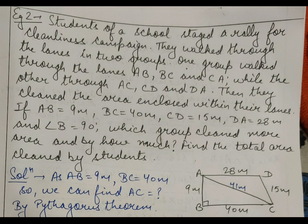There is one more example: students of a school staged a rally for a cleanliness campaign. They walked through the lanes in two groups. One group walked through lanes AB, BC, and CA, while the other walked through AC, CD, and DA. They cleaned the area enclosed within their lanes. AB equals 9 meter, BC equals 40 meter, CD equals 15 meter, DA equals 28 meter, and angle B equals 90 degrees. Which group cleaned more area and by how much?